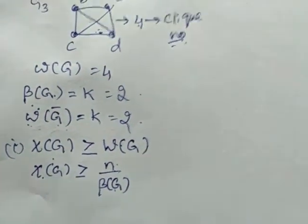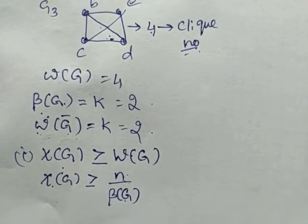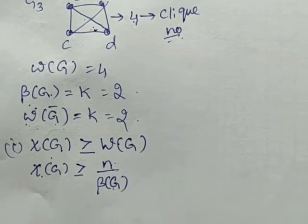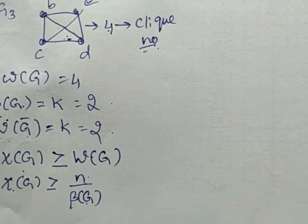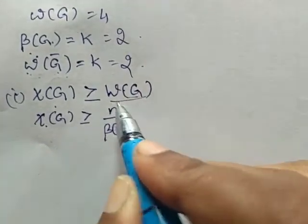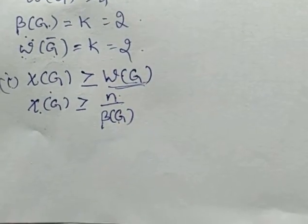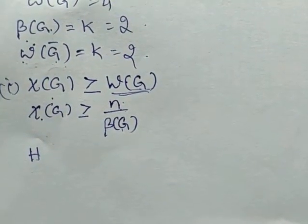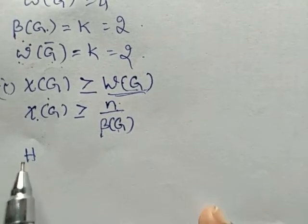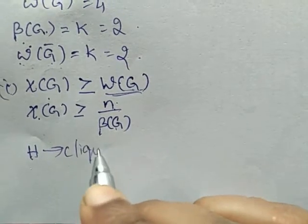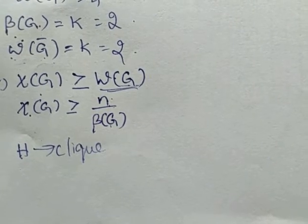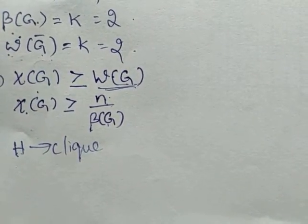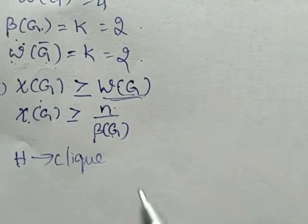We are going to prove that chromatic number is greater than or equal to ω(G). The chromatic number is the least number of colors required to color a graph. ω(G) means the number of vertices in a clique. Let H be a complete subgraph of G — that is, let H be the maximum complete subgraph, which is our clique. So H is a subgraph whose order is ω(G).